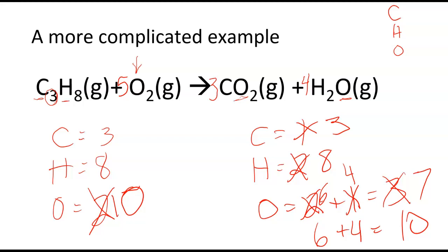When you have very complex problems like this, it's extremely important that you go back through and double check. Always recount your atoms to make sure that you have the right number on each side. Three carbons, eight hydrogens. Five times two, ten oxygens.